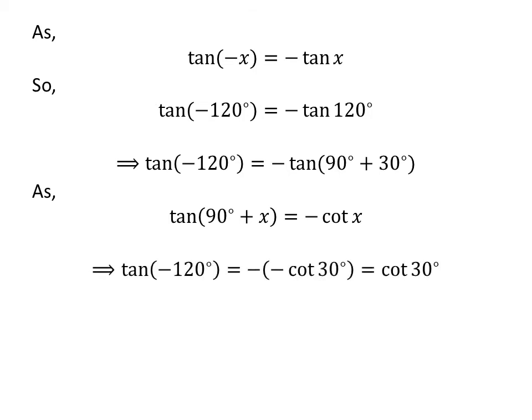Let us apply the above identity for tangent of 90 degrees plus 30 degrees. Here, x is 30 degrees. So, tangent of minus 120 degrees is equal to minus of minus cotangent of 30 degrees, which is equal to cotangent of 30 degrees, as minus of minus is plus.